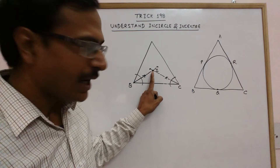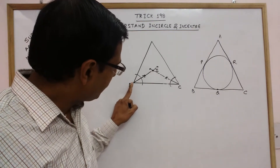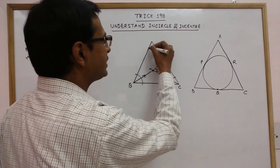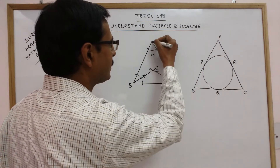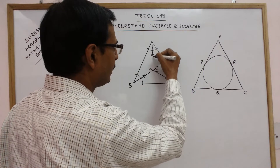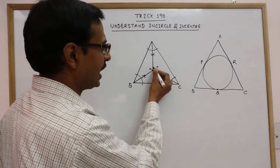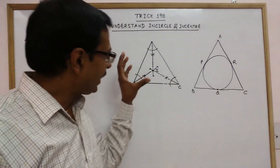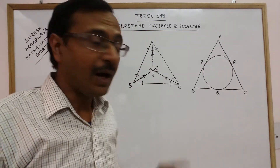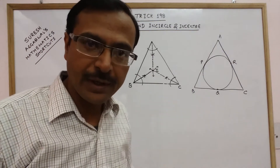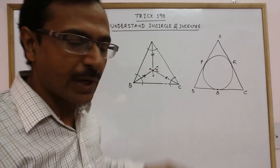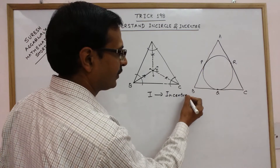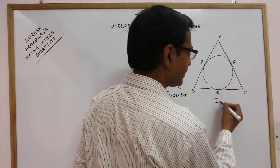I have labeled this point as I. This is the point of intersection of the angle bisectors of two angles. If you draw the angle bisector of the third angle also, it will automatically intersect the two other angle bisectors at point I itself. So all three angle bisectors of a triangle are concurrent — they pass through the same point I, which is known as the incenter. This circle is known as the incircle.